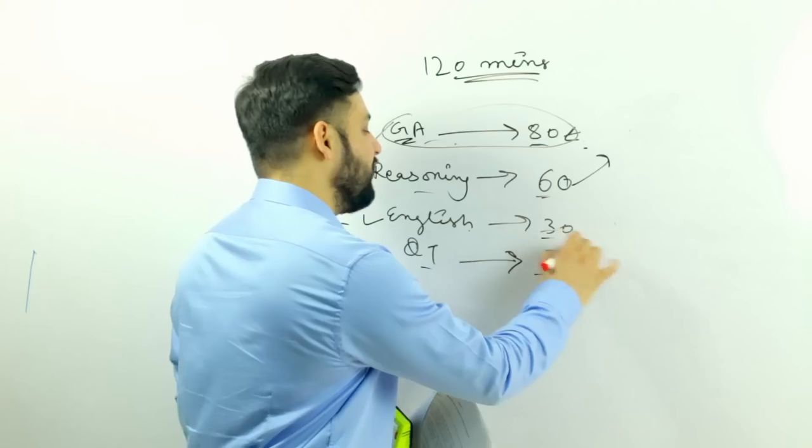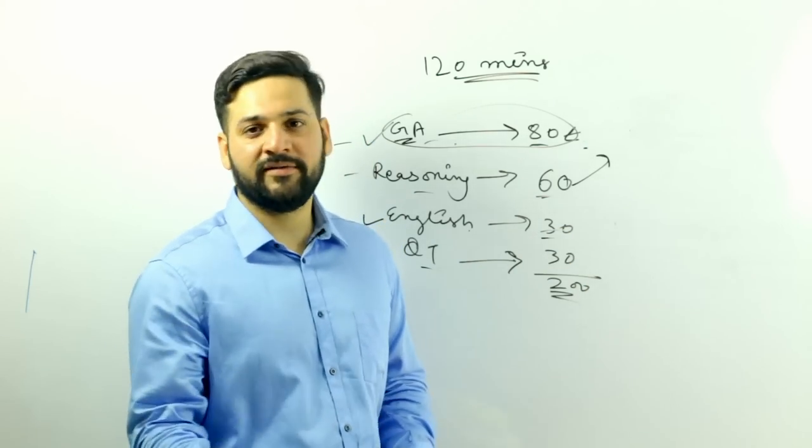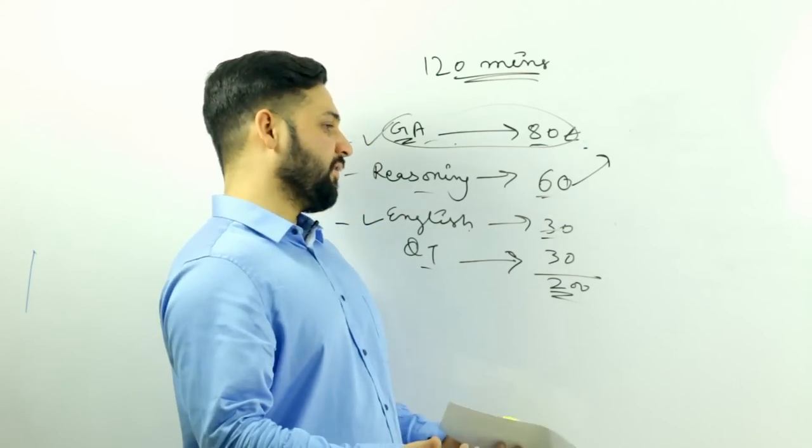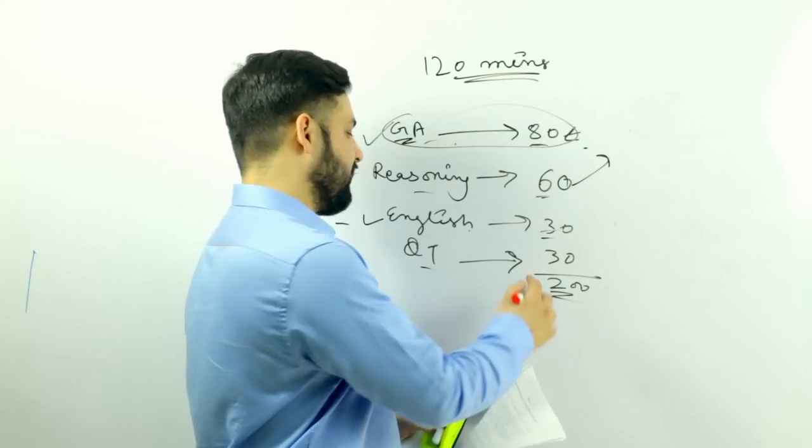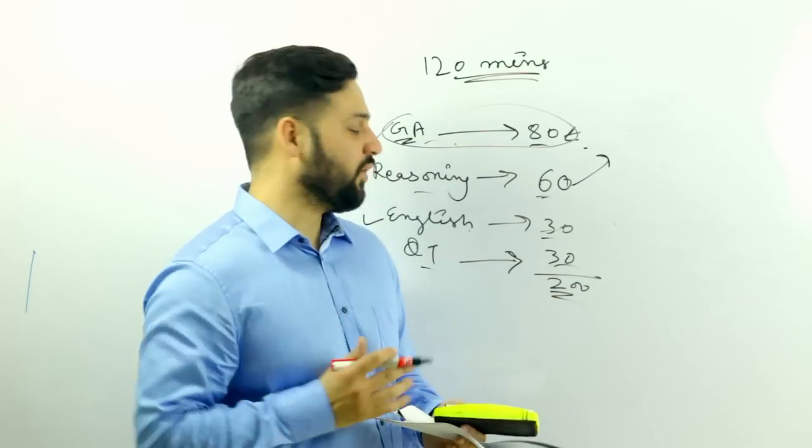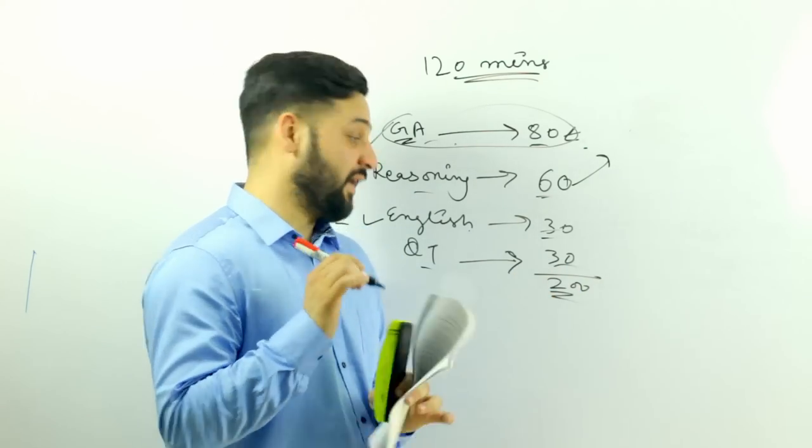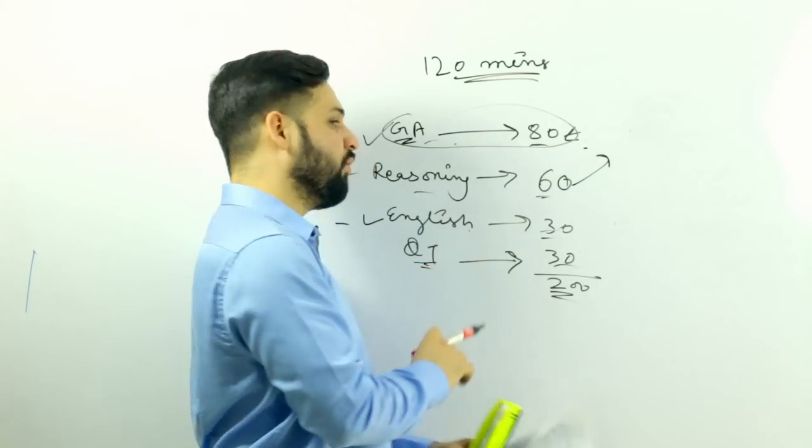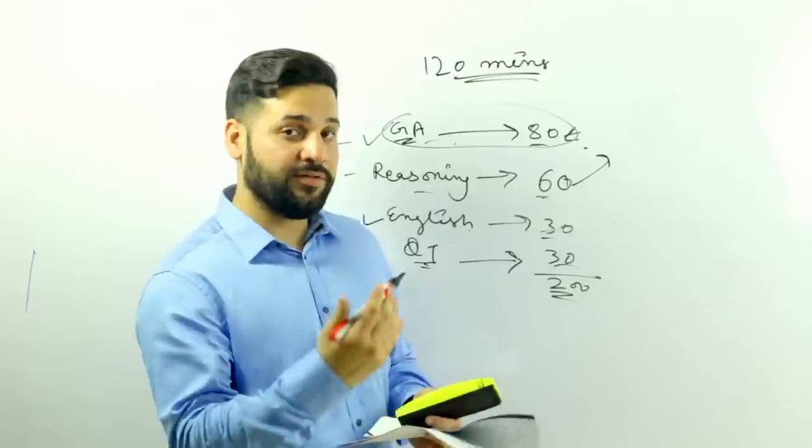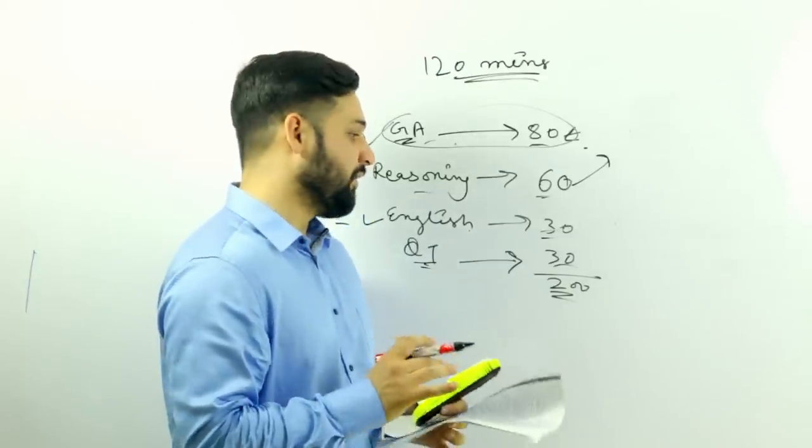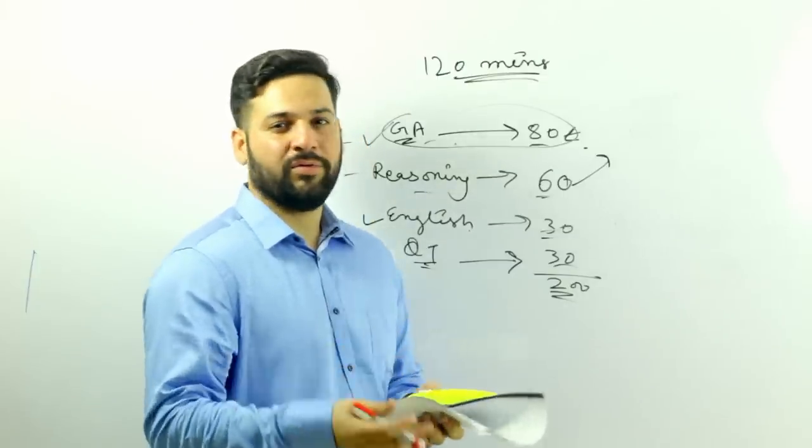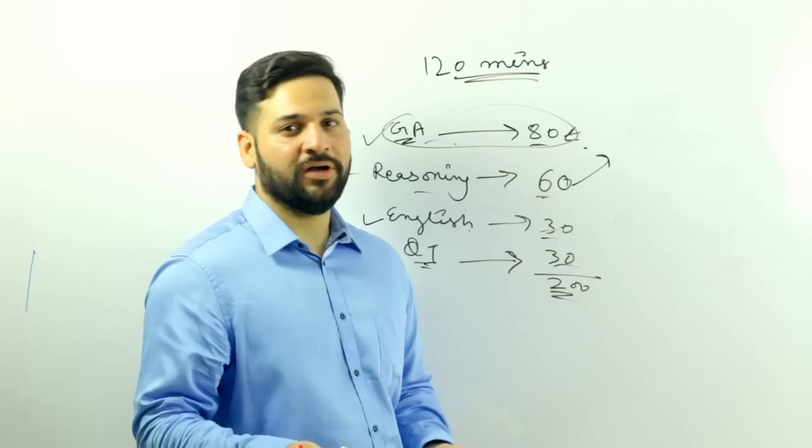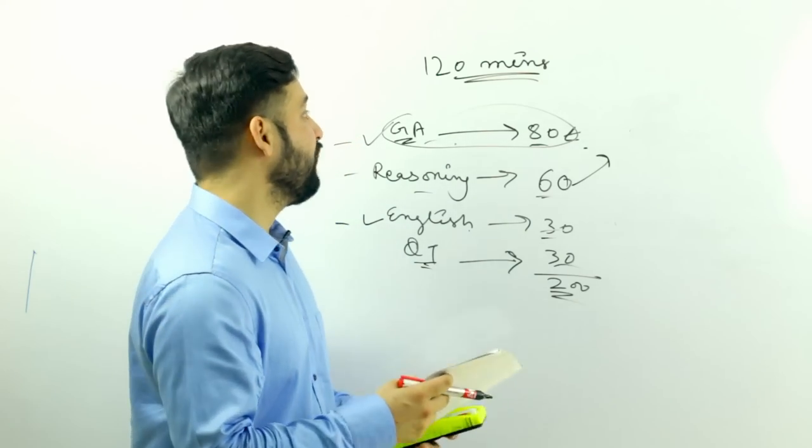In the English, similar questions - RCs, double fillers, close test, error spotting. In the QT, there will be one or two DI sets that will be purely based on financial statements. Most of the times in QT they'll give you a graph out of a financial statement. They'll give you series or mixed questions based on time and work, time and distance, similar questions. So that is the phase one exam.